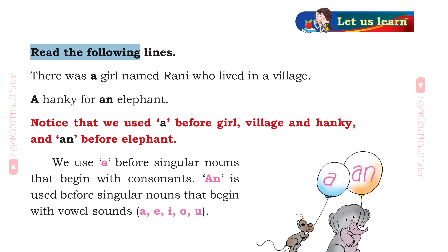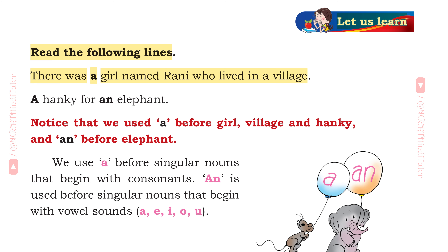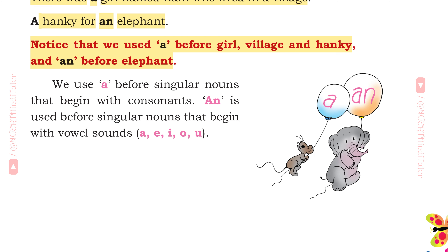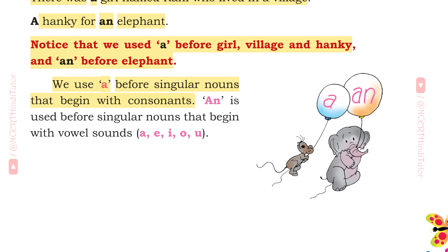Let us learn. Read the following lines: There was a girl named Rani who lived in a village. A hanky for an elephant. Notice that we used A before girl, village and hanky, and AN before elephant. We use A before singular nouns that begin with consonants. AN is used before singular nouns that begin with vowel sounds.